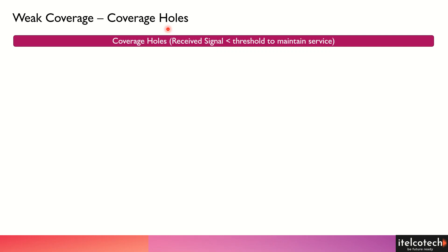Let's understand the different scenarios where we need to optimize coverage. One such scenario is a weak coverage area, where we have coverage holes between different cells and sites. A coverage hole means there are certain sites, but there is a spot — a black spot — where the signal strength or RSRP is less than the threshold required to maintain service for the consumer.